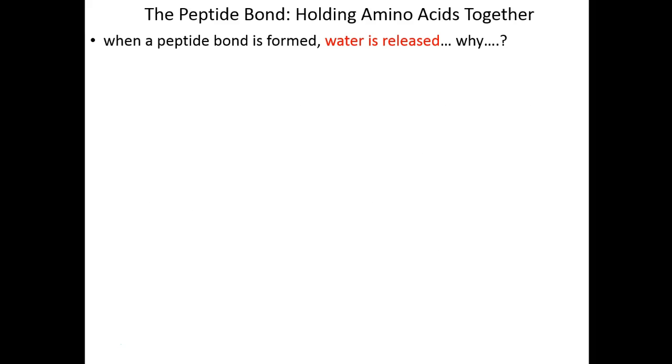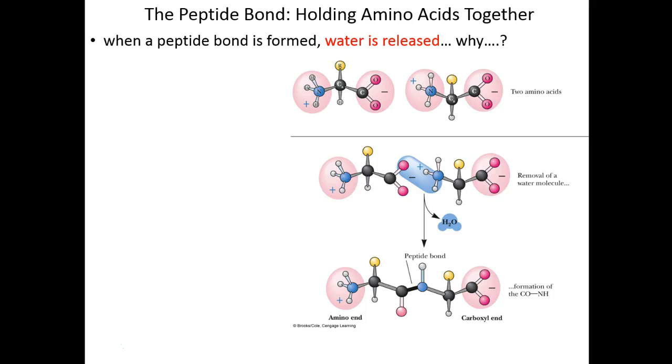When a peptide bond is formed, water is released. That might strike us as odd, but let's go to the chemistry here. When we make this peptide bond, we're ripping off an oxygen atom from the carboxy group and two protons from the neighboring amino group. That oxygen and two hydrogens come together to make water, which leaves the reaction as a leaving group.